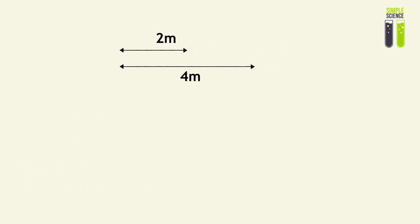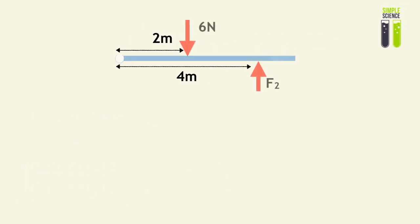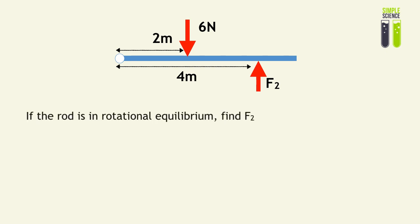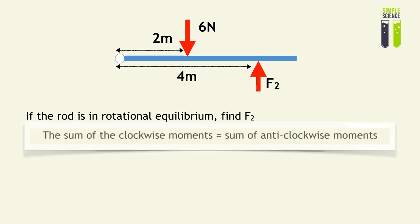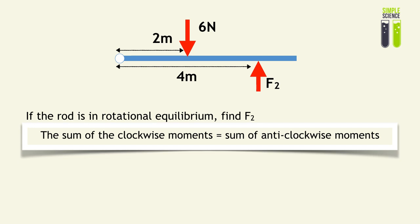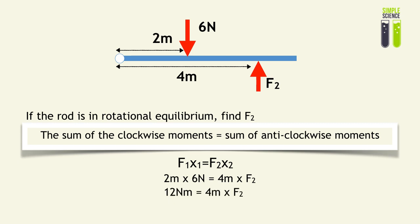The more common example is when you're asked to find what a certain force in the system is. In this question, if this rod is in rotational equilibrium, find f2. The rule says the sum of the clockwise moments equals the sum of the anti-clockwise moments, giving f1·x1 = f2·x2. For the clockwise moments, 2 meters times 6 newtons gives 12 newton meters, which equals 4 meters multiplied by f2. We can then calculate f2 to be 3 newtons, from 12 divided by 4.